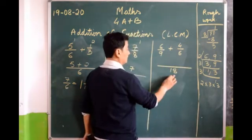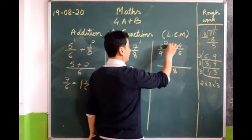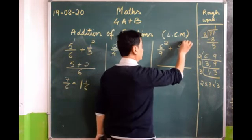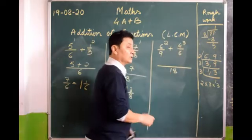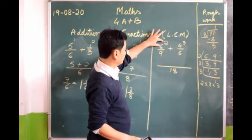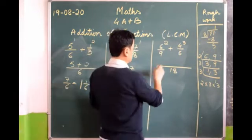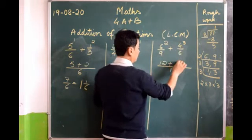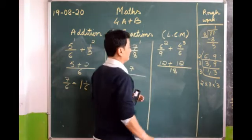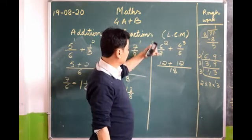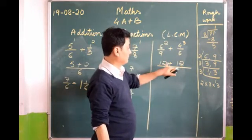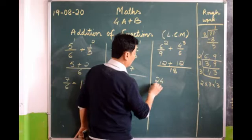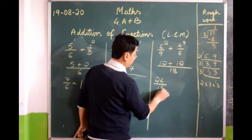9 goes into 18 two times — 9 twos are 18. 6 goes into 18 three times — very good, 3 times. Now what should we do? We should multiply: 6 times 2 is 12, plus 3 times 4 is 12. So we get 12 plus 12 equals 24/18.